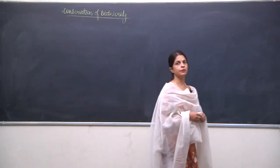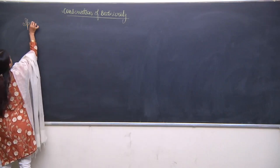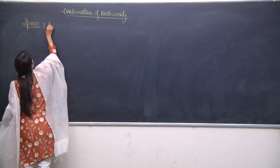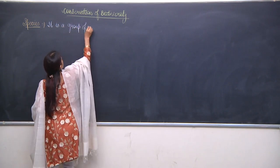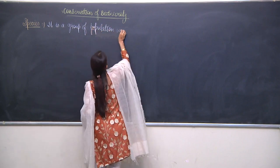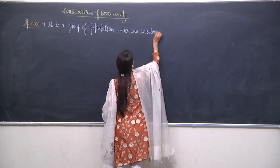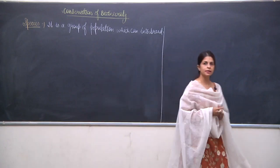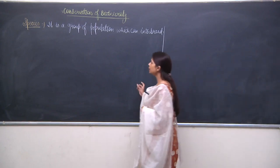So, what is the meaning of species? I will write the definition of species. A species is a group of population which can interbreed — that means they can reproduce and produce their offspring. So this is the meaning of species.